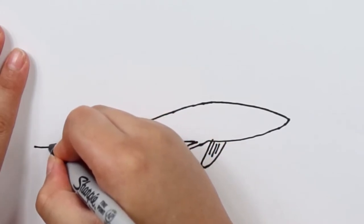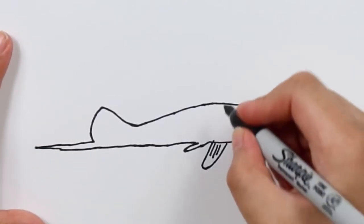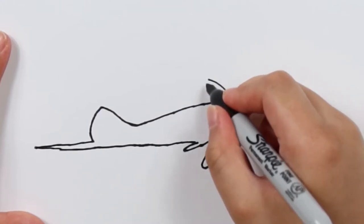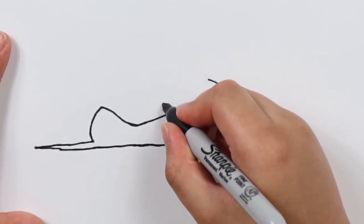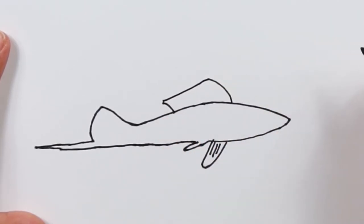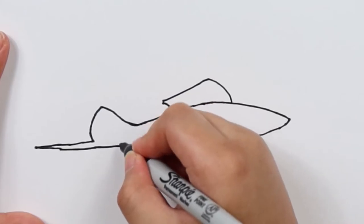Then for the fin, we draw one line kind of curved like this, small line curved like this, then connect them together like that. And over back over here.